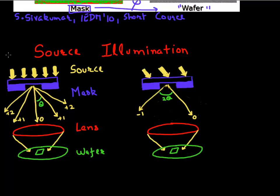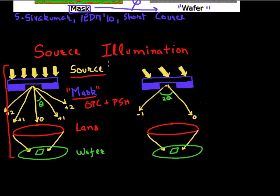So far, optical proximity correction and phase shift mask are both things you do on the mask to achieve better resolution. But we can also ask: can we do something on the source of the light — the illumination? One simple thing is to use off-axis illumination. Instead of shining light at normal incidence, you can shine it at an angle, which achieves a better diffraction pattern and much higher angular collection. You can have multiple angles at which light comes in — that is off-axis illumination.